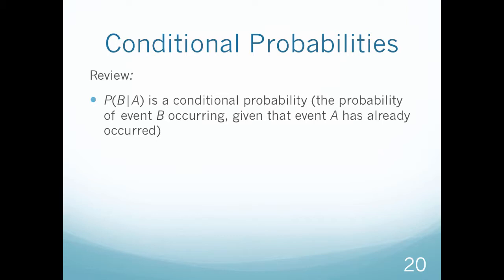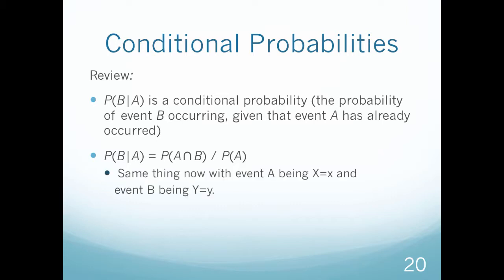The probability of event B occurring given that event A has already happened — for example, what's the probability that it's going to rain given that it's cloudy? The formula for a conditional probability is: the probability of B given A equals the probability of A intersect B divided by the probability of A. With joint distributions, A corresponds to the X random variables and B to the Y random variables.